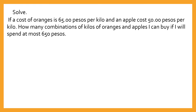So let's have a word problem that involves inequality in two variables. If a cost of oranges is 65 pesos per kilo, and an apple costs 50 pesos per kilo, how many combinations of kilos of oranges and apples can I buy if I will spend at most 650 pesos? First, we need to underline the givens — 65 pesos per kilo of oranges, 50 pesos per kilo of apples, and the inequality 'at most.'